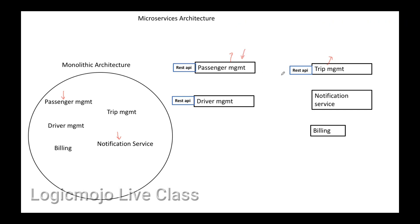Bug fixing is also very easy in microservice architecture. Even if one particular module fails, it won't create problems for the other modules. Along with these benefits, there is one more component introduced in microservice architecture: the API gateway.